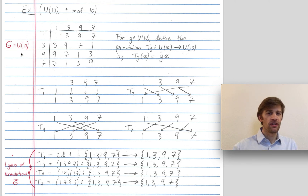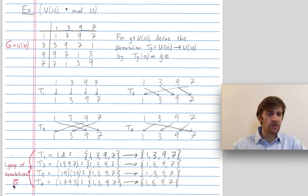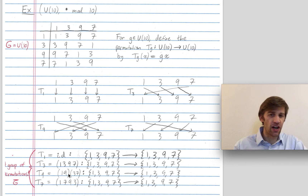So here's my group. Its elements are 1, 3, 9, and 7. The group of permutations that it's going to be isomorphic to is G-bar down here. The elements of G-bar are T1, T3, T9, and T7. T1 is just the identity permutation. T3 is a 4-cycle. T7 is also a 4-cycle going in the reverse direction. T9 is a product of two 2-cycles — it transposes 1 and 9, and it transposes 3 and 7.